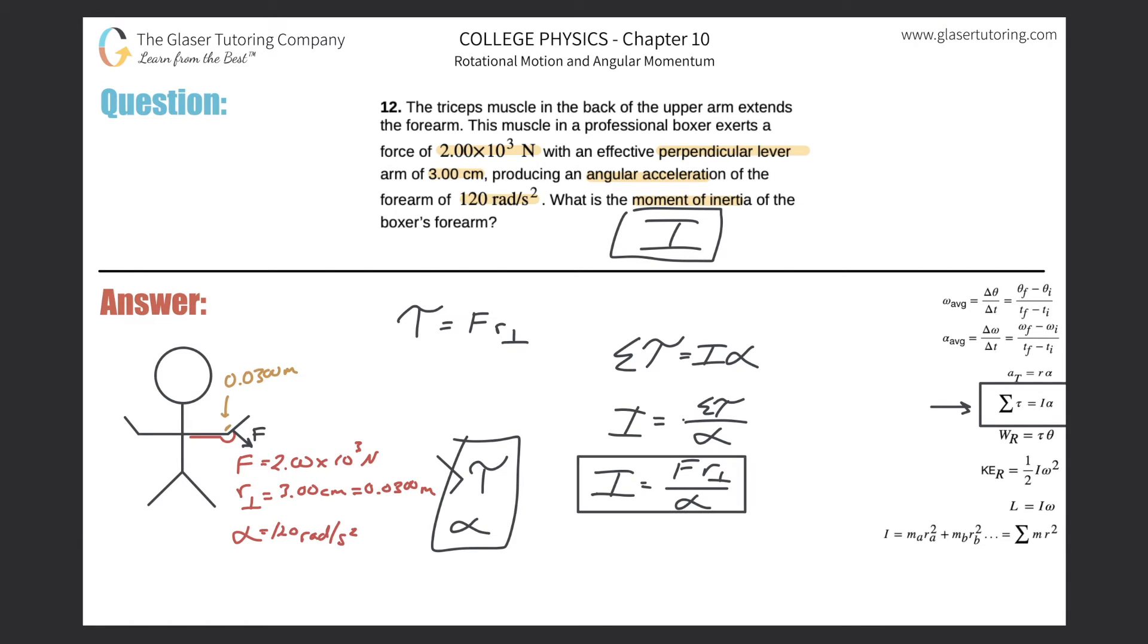So moment of inertia is the force applied, 2.00×10³, multiplied by that perpendicular lever arm 0.03 meters, and then divide that by 120 radians per second squared. And lo and behold, plug it into the calculator: 2×10³ times 0.03 divided by 120, and we get a value of 0.5.